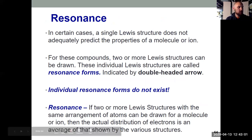And that's a situation that arises when we have some ambiguity with where to put double or triple bonds. We have a single Lewis structure that doesn't properly predict the properties of a molecule or an ion.